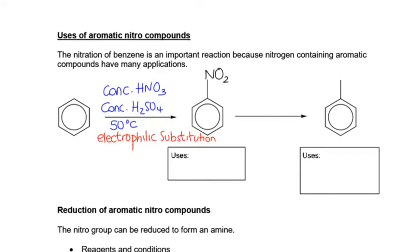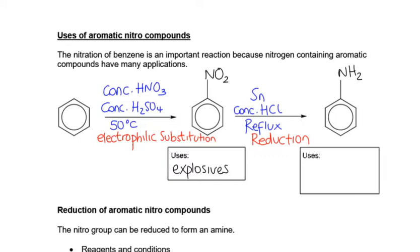We use these nitro compounds in explosives — we mentioned TNT earlier. Then how do we turn that into an amine, an aromatic amine? To do that, we use tin and concentrated HCl and reflux it, and that is a type of reduction. These aromatic amines are used in lots of dyes, but they're also used in pharmaceuticals, such as a starter material to make paracetamol.